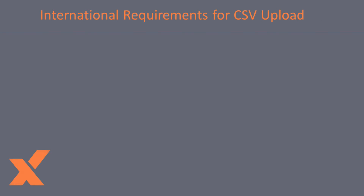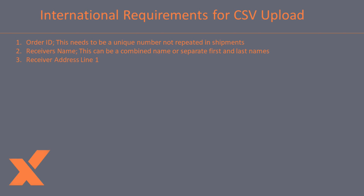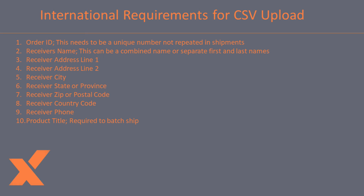The columns required for international orders are: Order ID, receiver's name, receiver address line 1, receiver address line 2, receiver city, receiver state or province, receiver zip or postal code, receiver country code, receiver number, product title, product price, product quantity, and product weight. Note: you can do one CSV mapping and upload for both domestic and international shipments — you will just need to make sure you meet the requirements for the international upload.